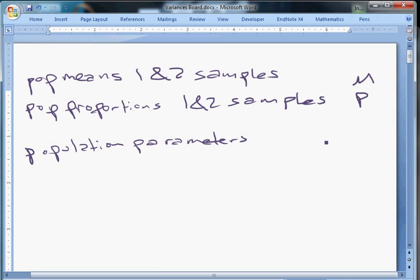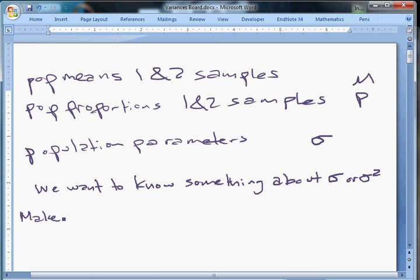Now we're going to look at population parameters where we're trying to make inference about sigma. In particular, we're going to be doing hypothesis testing. So we want to know something about sigma or sigma squared. Once we know something about one, we can say something about the other. So what we're going to do is what we've done before: we're going to make an assumption and test to see if it's a reasonable assumption.